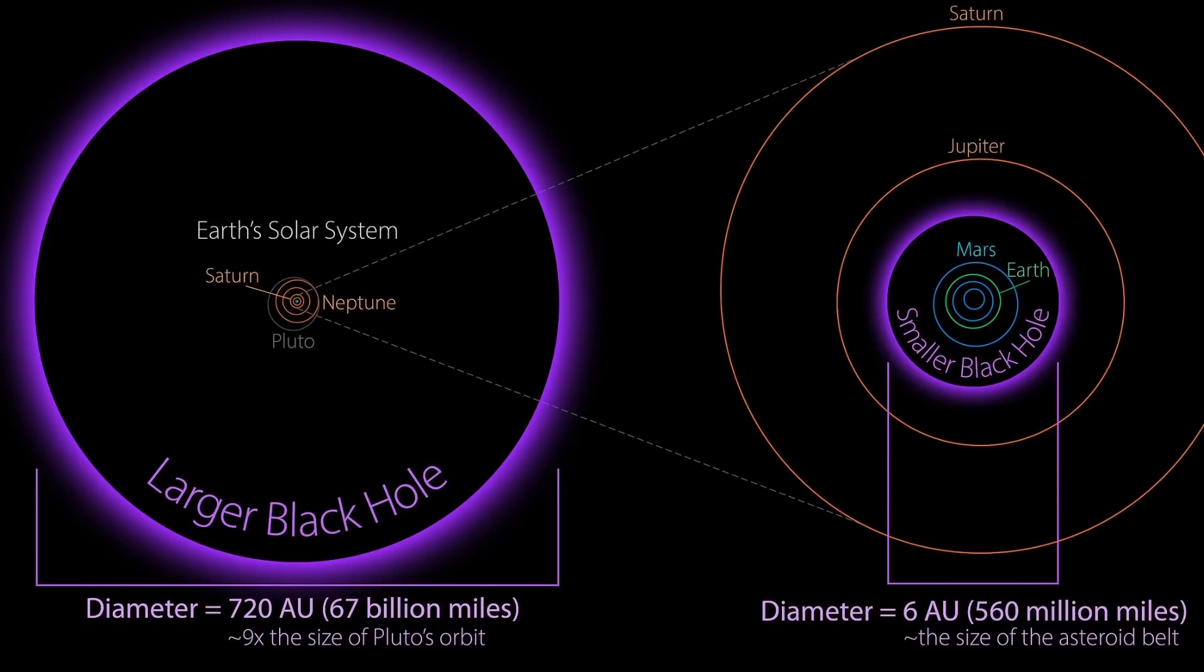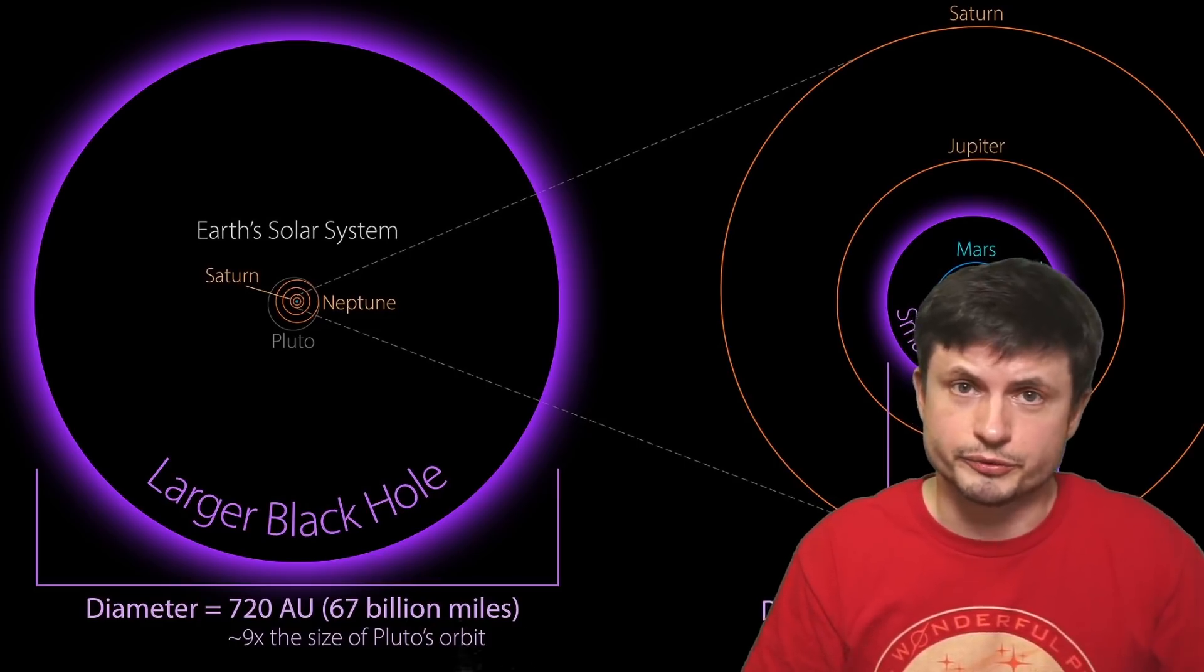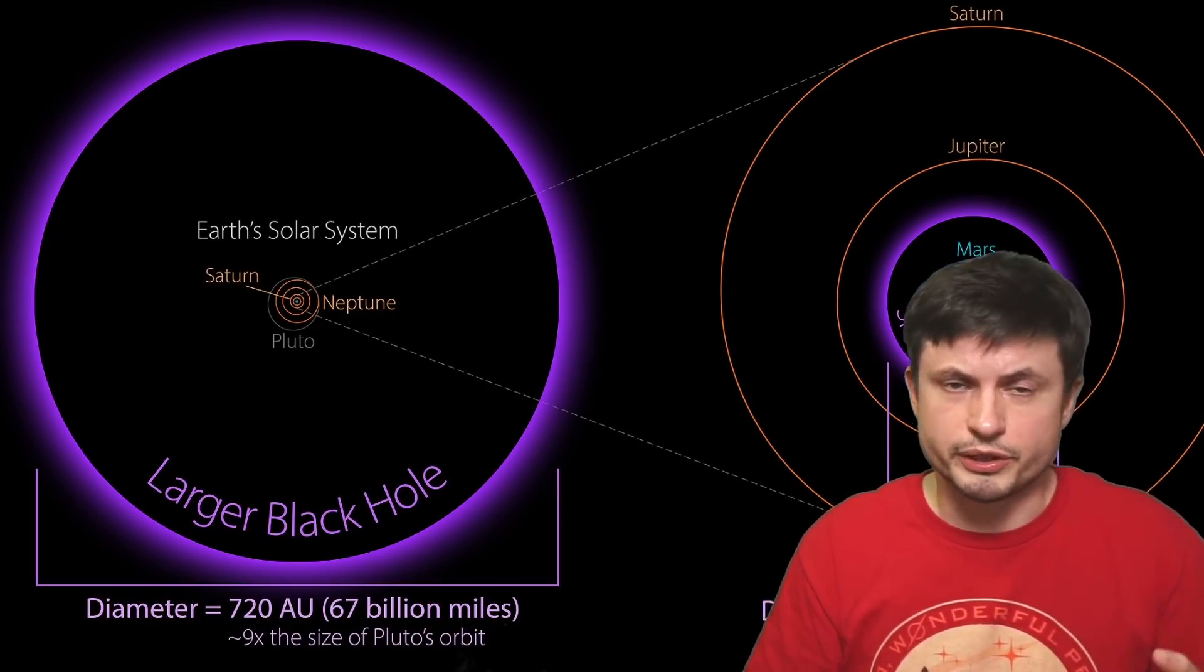With both black holes also being really, really massive. The smaller black hole here is significantly larger than the one in the Milky Way galaxy, and would have a diameter of about six astronomical units. Whereas the larger black hole would actually have a diameter of 720 astronomical units, and would cover the solar system completely. In terms of mass, the smaller one is about 150 million masses of the Sun, and the larger one is about 18 billion masses of the Sun. One of the largest black holes ever found. And that was something from a few years ago.